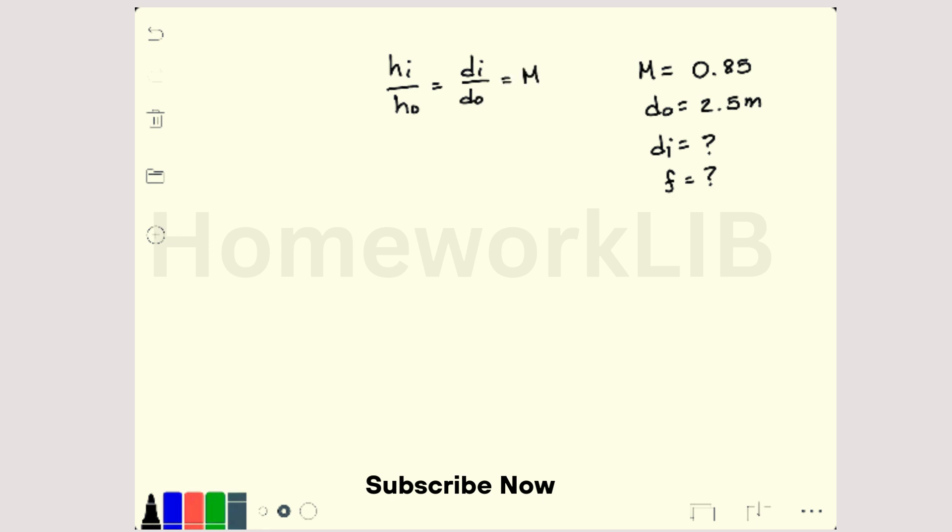We're only going to be using this portion of it, so we can solve for what distance of the image is being created or where your image is being produced. Now this magnification is 0.85, we're going to multiply that by 2.5 and get a distance of the image of 2.125 meters.